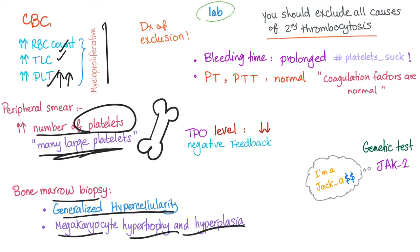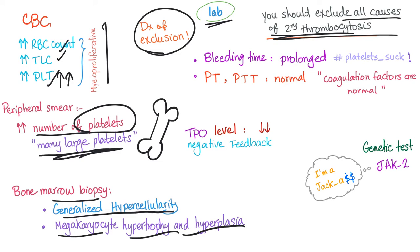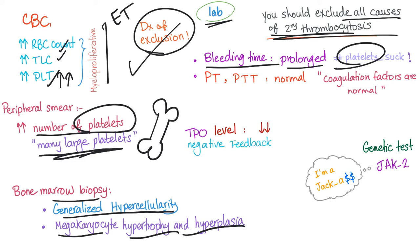Diagnosis of essential thrombocytosis is a diagnosis of exclusion. You must exclude all causes of secondary thrombocytosis — such as infection, inflammation, and iron deficiency — before diagnosing a patient with ET. Bleeding time is prolonged because it's a platelet problem and these platelets are dysfunctional. PT and PTT are normal because coagulation factors are intact. Genetic testing can identify the JAK2 kinase mutation.